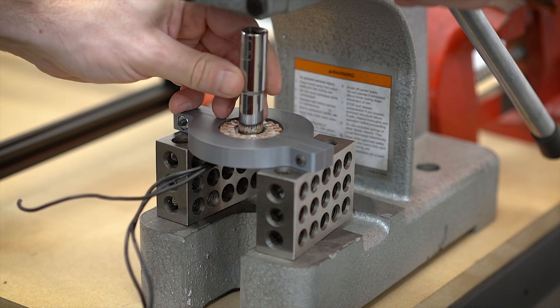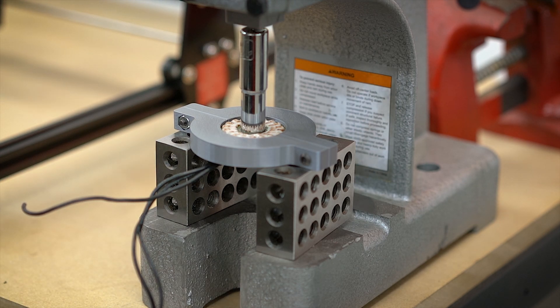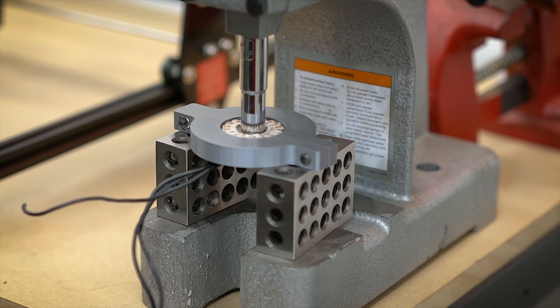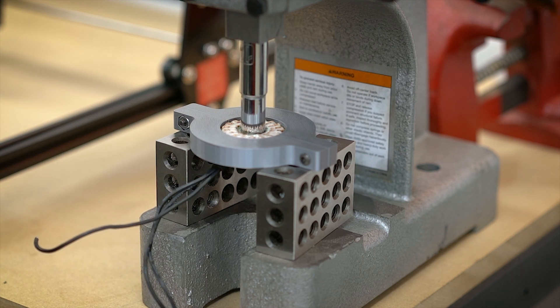I typically use sockets a lot for pressing stuff like this through. I'm just using a couple 1-2-3 blocks to space everything up and then just sit there and press down on the handle, press on the socket, and it should press the center out.